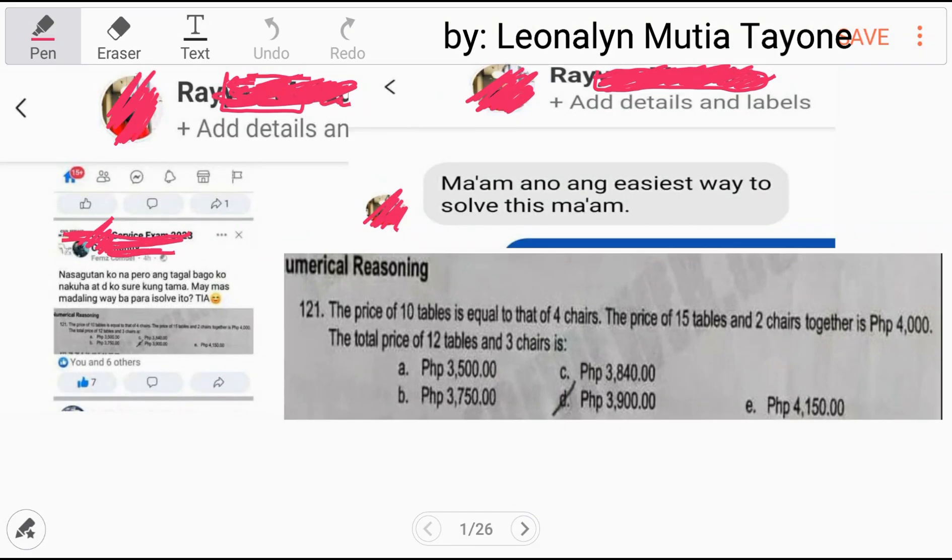Welcome to our YouTube channel, Solving Math with Leona Lynn. Now let's answer a question from one of our followers. The price of 10 tables is equal to that of 4 chairs. The price of 15 tables and 2 chairs together is 4,000 pesos. The total price of 12 tables and 3 chairs is what? At ito yung mga choices.